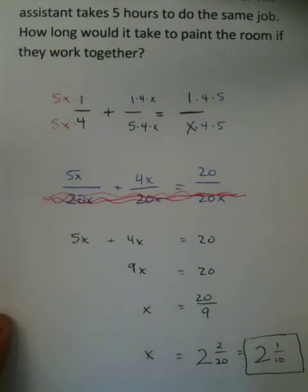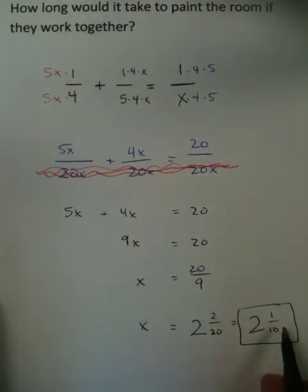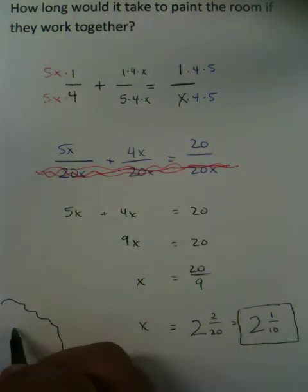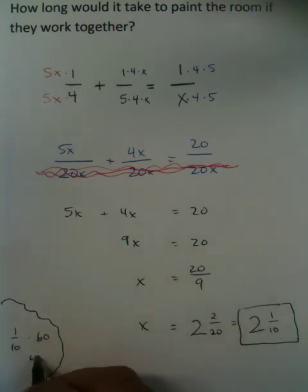So it would take them together 2 and 1 tenth of an hour. Now, if this was an SAT question, they'd probably go one step further because they'd want to know how 1 tenth of an hour is represented. So what you'd have to do is you'd have to take a little bit of scratch work and say, what's 1 tenth times 60 since there are 60 minutes in an hour? Then you'd put 60 over 10, which would reduce down to 6.